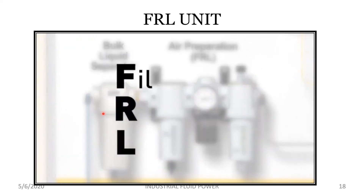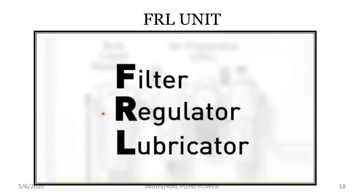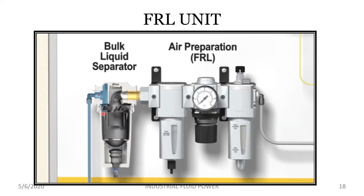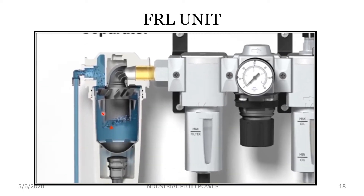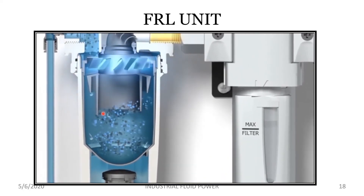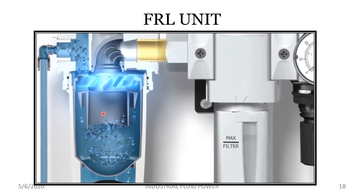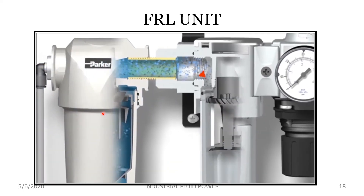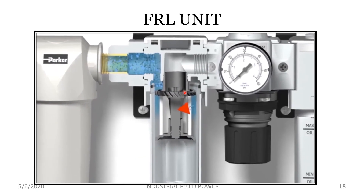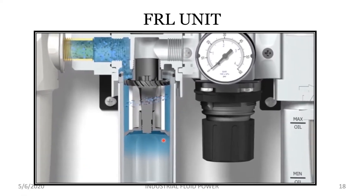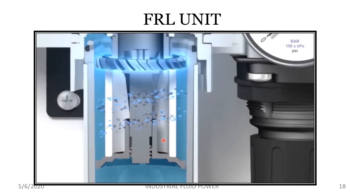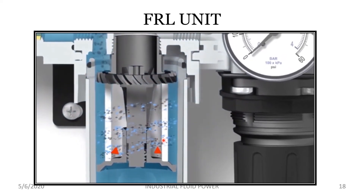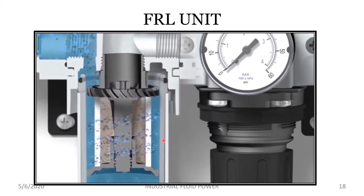FRL is short for filter, regulator, and lubricator, which are common pieces that make up the air preparation unit. Typically the first unit is called a bulk liquid separator, which circulates or spins the air using specially shaped vanes. The rapid circulation of the pressurized air sheds unwanted moisture due to centrifugal force. The next unit is a filter which further removes particulate and moisture in a two-stage process, using vanes or louvers in the first stage and a filter element screen in the second stage to catch unwanted debris.